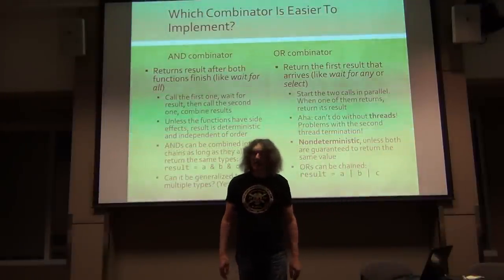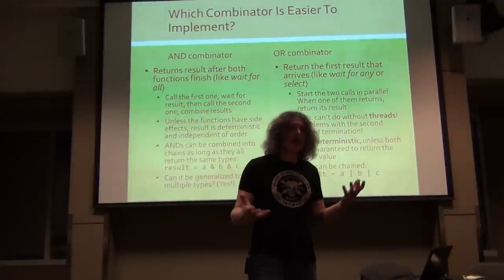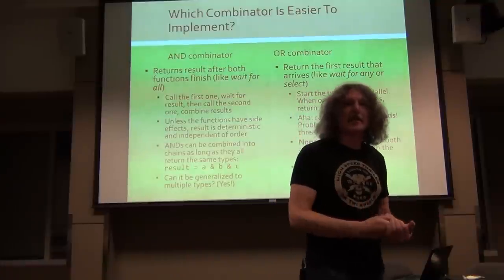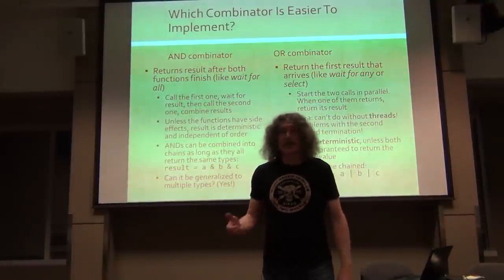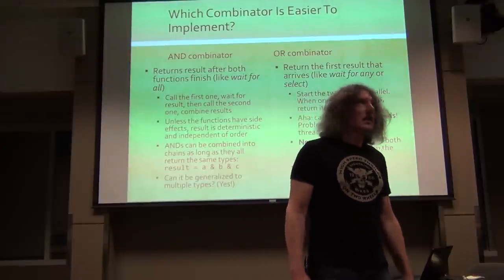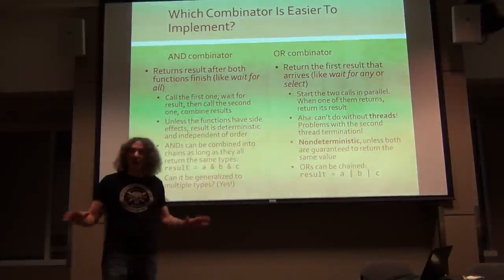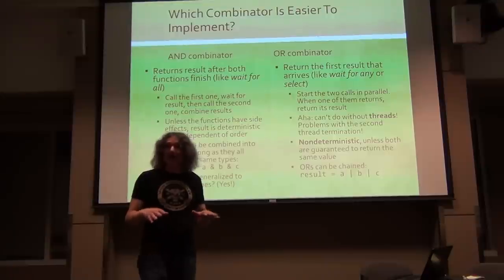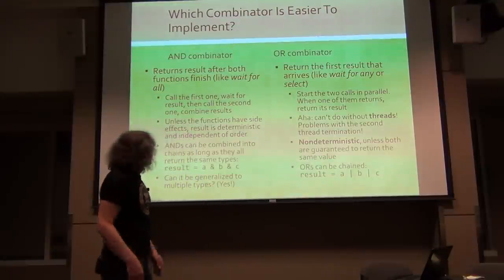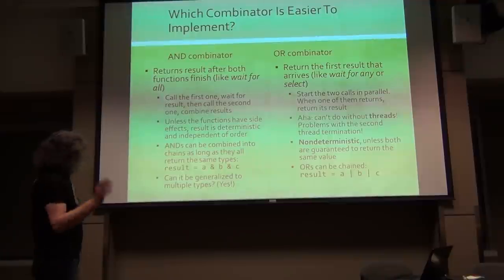And here's a little teaser. There's something called a Combinator. If you are dealing with Asynchronous calls, how do you combine them? You have two asynchronous calls, and you want to combine them using the AND Combinator. So what does the AND Combinator do? It returns results after both asynchronous calls are finished, no matter in what order. They will wait for the last one, and once they are finished, they will combine their results in some way and return. It's sort of like wait for all.